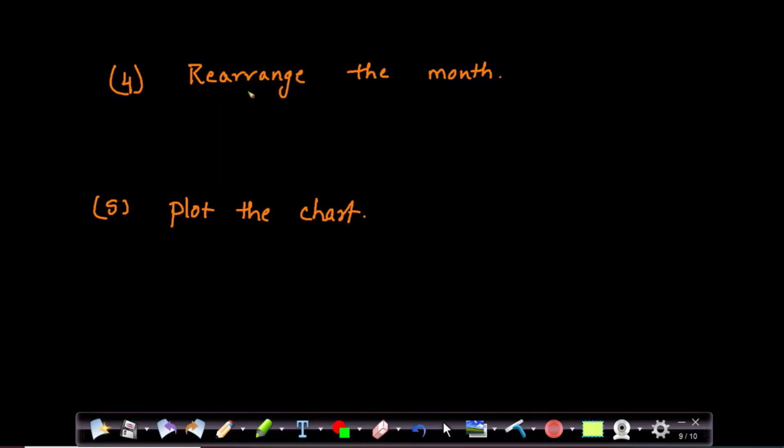Now, in data frame, the month names are not arranged. Chronologically, it is not arranged like Jan, Feb, March. So, you have to rearrange the month. And then the last step is plot the chart.